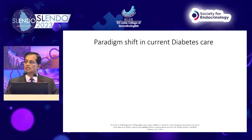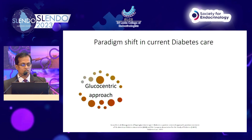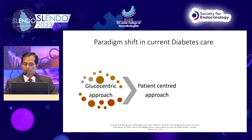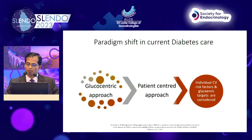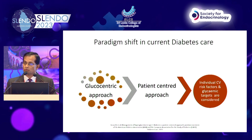There has been a shift in current diabetes care. We started about 10 years ago with a glucocentric approach, looking mainly at HbA1c and fasting blood sugar and targeting them to certain levels. Then we moved to a patient-centered approach, and now we have come to addressing individual cardiovascular risk factors and glycemic targets together.